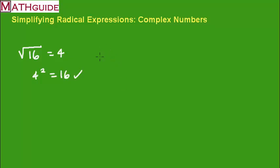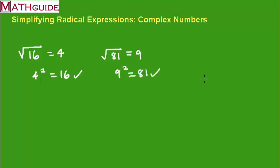Let's try the square root of 81. The square root of 81 is 9. That's because 9 squared, or 9 times 9, is 81.